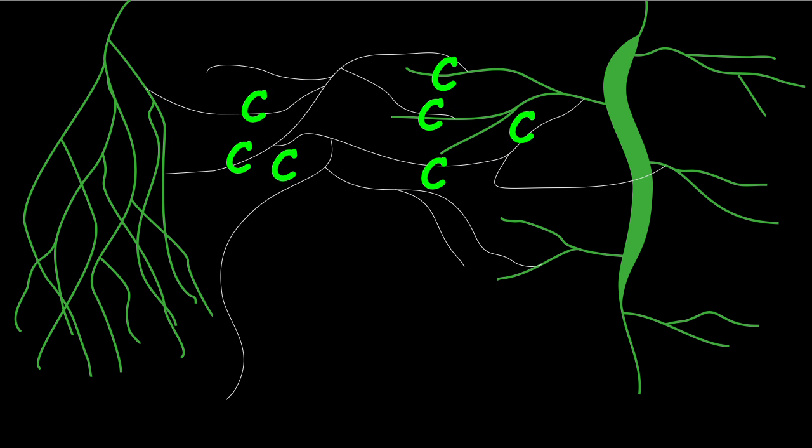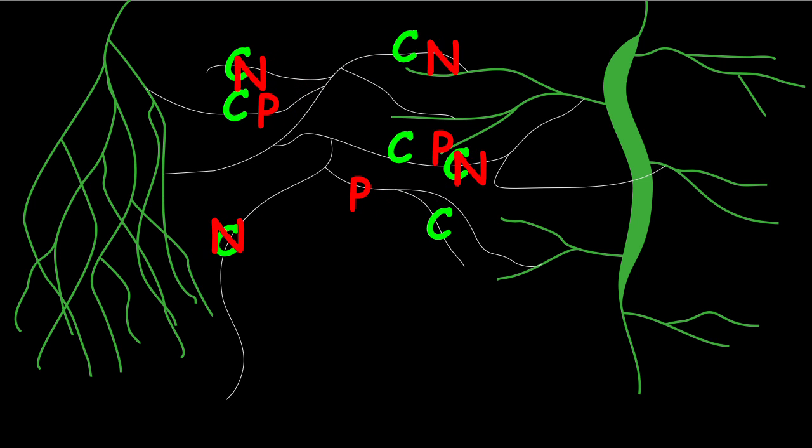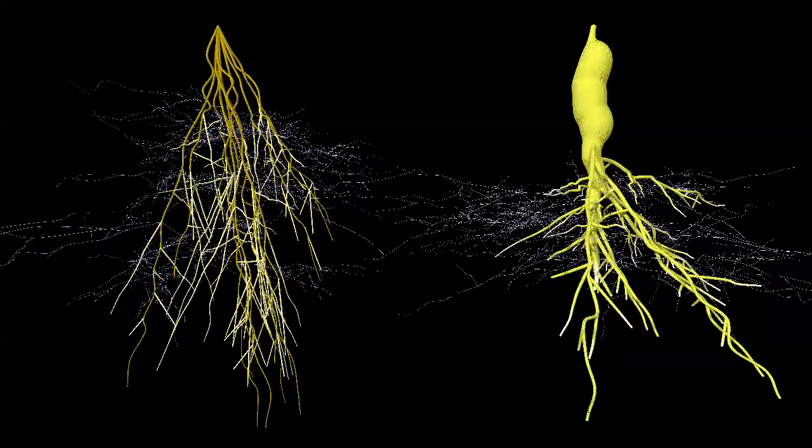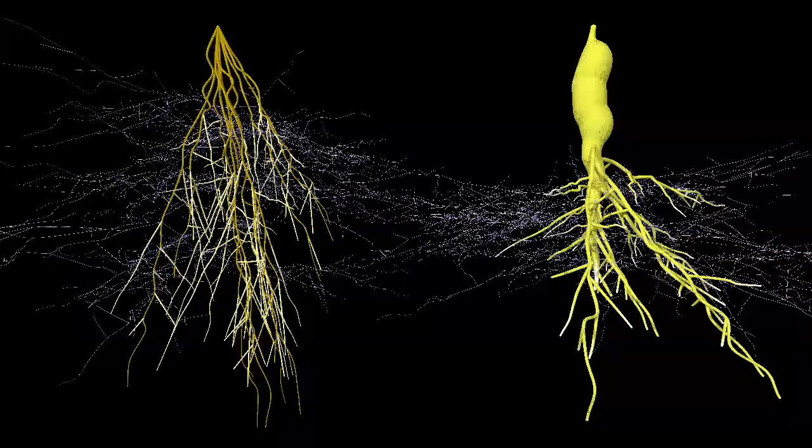Well, for sure. Mycorrhizal fungi, for example, usually colonize more than one single plant, this way connecting several root systems. The rules for nutrient exchange in such networks are largely unknown.